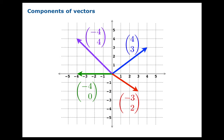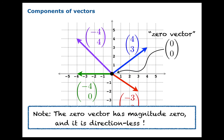There's one vector we haven't mentioned yet which is quite a critical vector: the zero vector. It's the only vector that doesn't get to be an arrow because it has no length — its length is zero, so you can't draw a vector. It has no direction; it is directionless. The zero vector has magnitude equal to zero, and it does not have a direction.